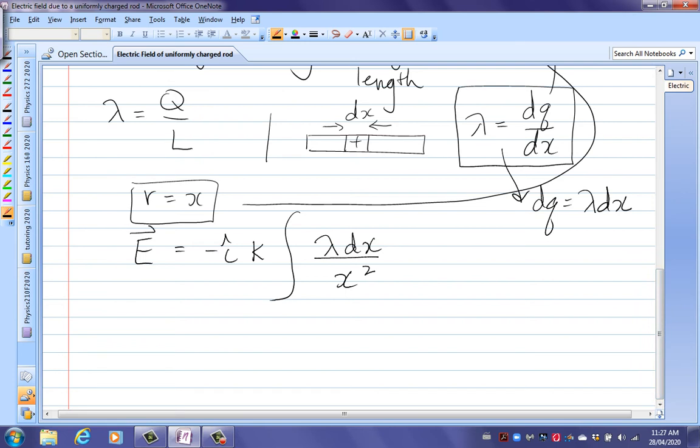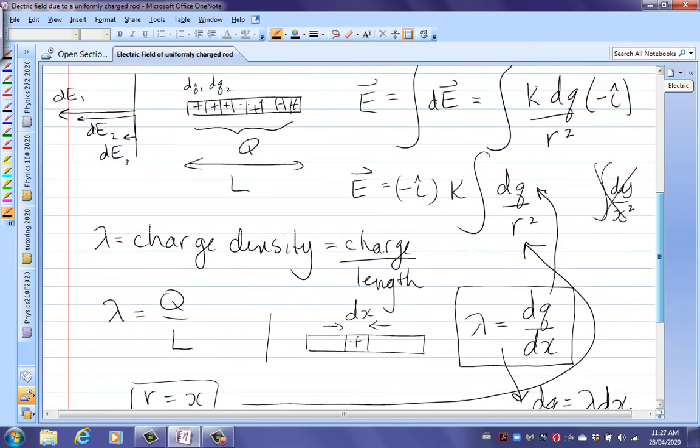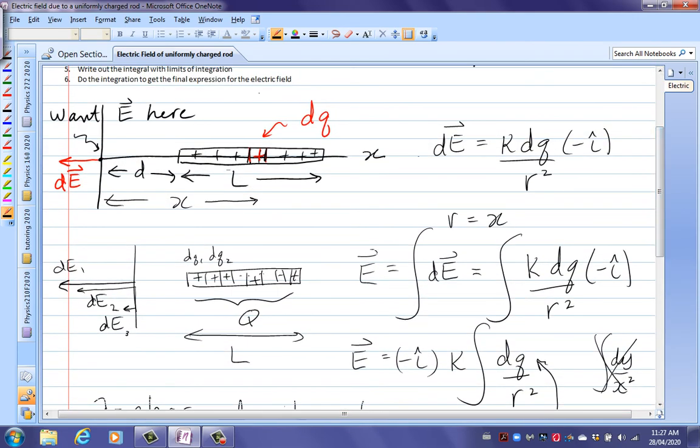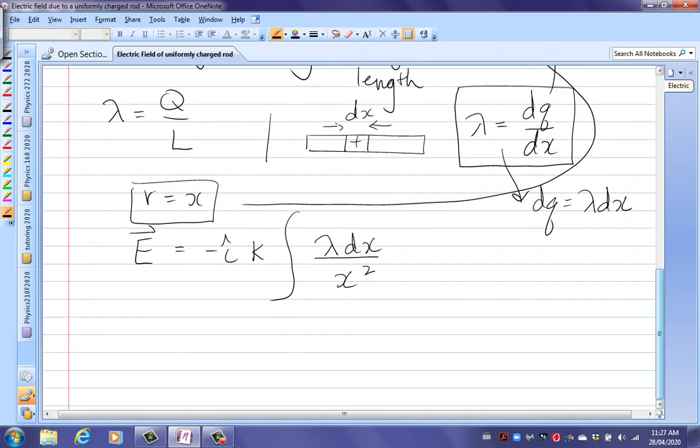So this is looking much better. Now, in physics we always have limits of integration. So we need to know where x starts and where x ends. As we sum over this rod. So you go back to your rod. And you see here that it starts at x equals d. And goes over to x equals d plus L. So our limits of integration over this rod would be from d to d plus L.